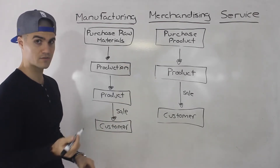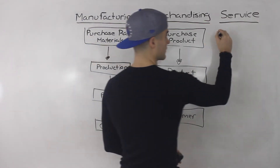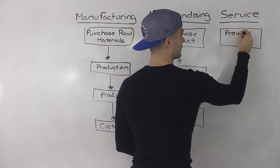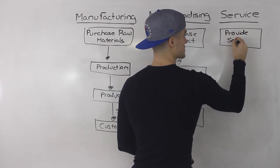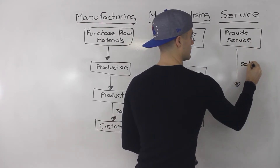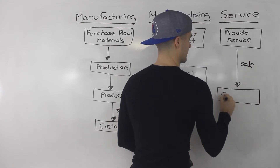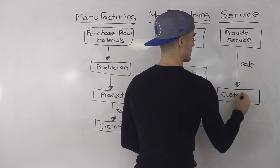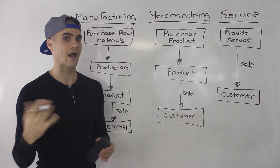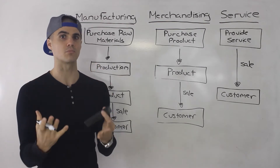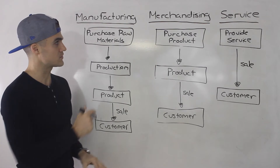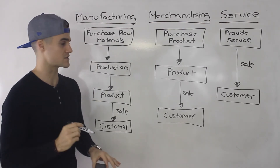And then there's a service company. Basically, they don't have a physical product — they're just providing a service, which they sell to a customer. This service can be anything, maybe like an accounting service or a legal service. There's no physical product present. And that's the three differences between a manufacturing, merchandising, and service company.